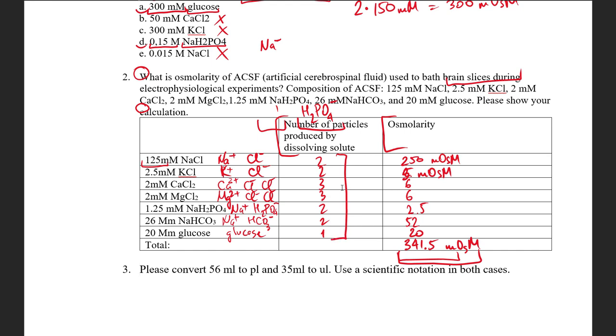We have one question from the previous quiz. It's about conversion. We have 56 milliliters and 35 milliliters, and we need to convert them into picoliters here and microliters here. First of all, let's determine what is a milliliter. It is 10 to the power of minus 3 liters. Then the picoliter is 10 to the power of minus 12 liters.